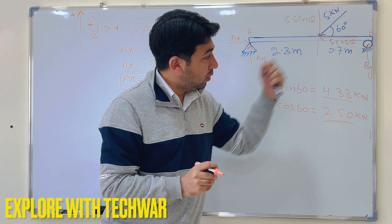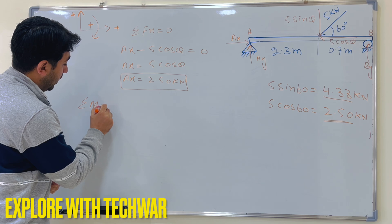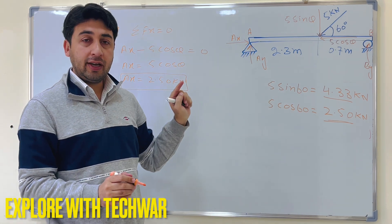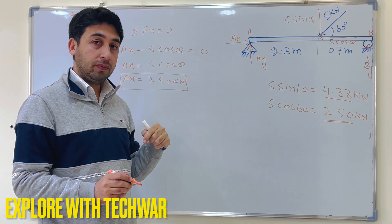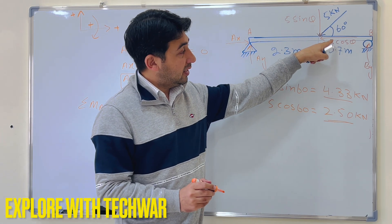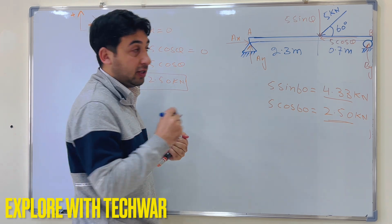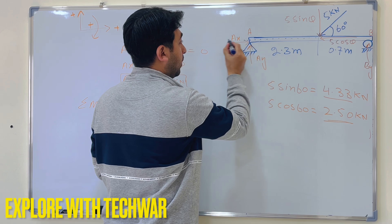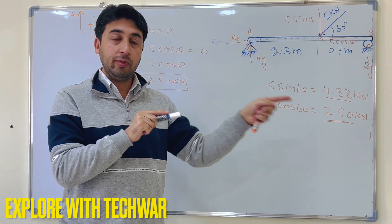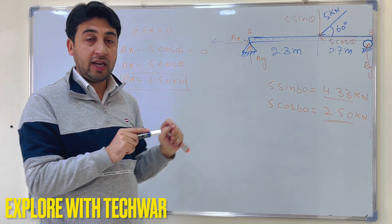To find By, I take the sum of moments about point A equal to 0. Ax passes through point A so its moment is zero. The 5 cos theta component also has its line of action passing through point A, so it produces no moment about A. Only the 5 sin theta component will produce a moment.